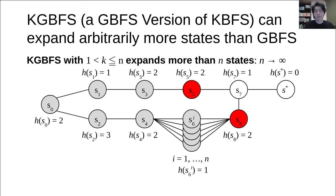As a result, K-GBFS expands more than N states in this example. Because N can be arbitrarily large, K-GBFS expands arbitrarily more states than GBFS in this example. Note that this example is independent of the tie-breaking strategy. This means that K-GBFS with any tie-breaking strategy can expand arbitrarily more states than GBFS with any tie-breaking strategy.